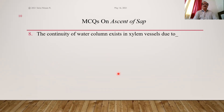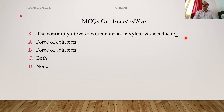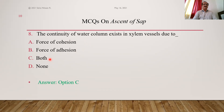Question 8: The continuity of the water column in xylem vessels is due to what? According to Dixon and Jolly, four points are important: force of cohesion, force of adhesion, continuity of the water column, and transpiration pull. The continuity of the water column exists due to both the force of cohesion and the force of adhesion. So both A and B are involved; option C is the answer.